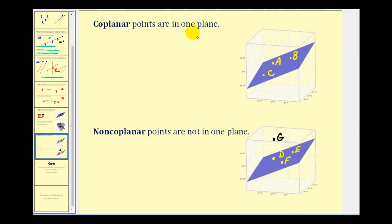coplanar points are in one plane. So in this graph here, points A, B, and C are coplanar. And non-coplanar points are not in one plane. So if we take a look at these four points, points D, E, F, and G are non-coplanar. Because the point G is not in the purple plane.